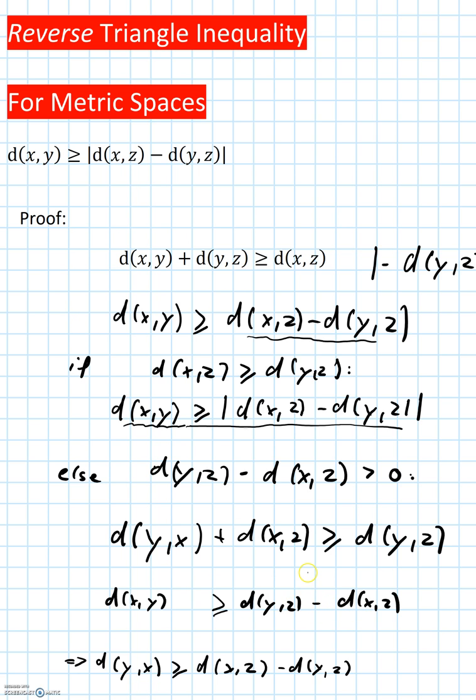And so all in all, we have shown that d(x,y) is greater than or equal to d(x,z) minus d(y,z) and also greater than minus d(x,z) minus d(y,z), which is nothing but d(x,y) is greater or equal to the absolute value of d(x,z) minus d(y,z).